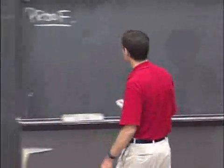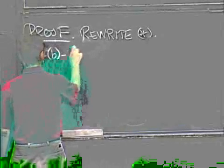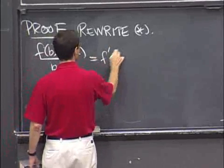Now, the way that the proof goes is simply to rewrite star, rewrite our formula. Which says that f of b minus f of a over b minus a is equal to f prime of c.